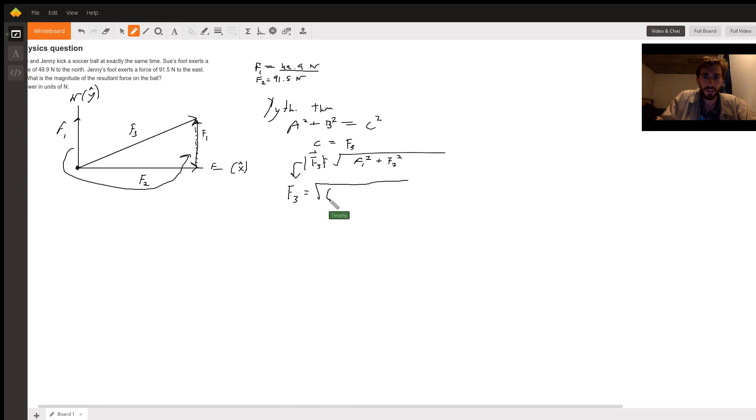You're just basically going to get 49.9 newtons squared. Remember you're squaring the units when you're putting these in, and 91.5 newtons squared. When you do that, you will get the resulting force. Let's just calculate it out real quick. So we have 49.9 squared plus 91.5 squared, square root. I am getting approximately 104.2 newtons.